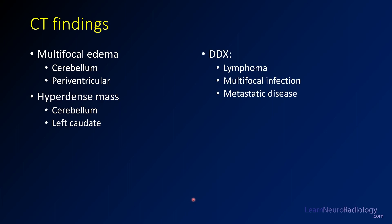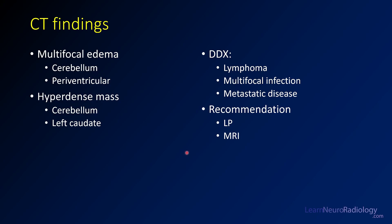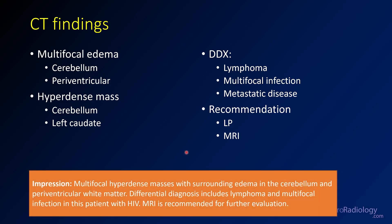The differential when thinking about hyperdense masses includes metastatic disease, lymphoma, and maybe multifocal infection like cerebritis or ventriculitis. We want to recommend an LP and MRI — you can take a little caution doing an LP given the cerebellar swelling, but it's probably okay; you might just take a little fluid for testing. In the impression, we call this multifocal hyperdense masses with edema in the cerebellum and periventricular white matter, and think about lymphoma and multifocal infection, particularly given this patient's HIV status. Recommend MRI to evaluate further.